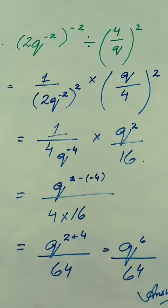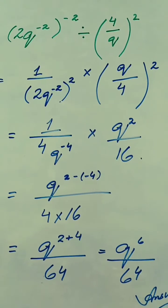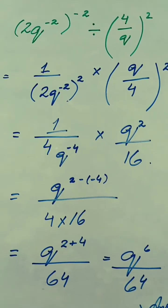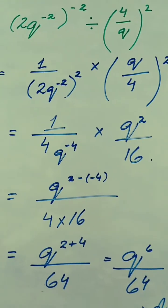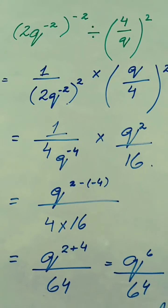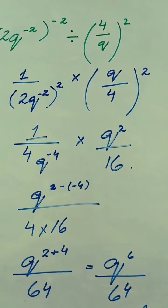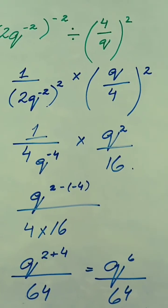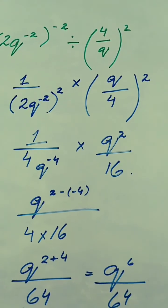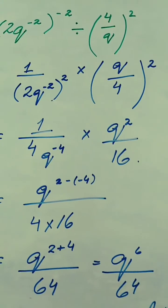Here we have another question: 2q raised to the power minus 2, whole to the power minus 2, divided by 4 over q, whole squared. First we make the minus 2 power positive by writing 1 over 2q to the power minus 2, whole squared. We have divided this factor by 1. Now changing the division sign to multiplication, the numerator becomes the denominator and the denominator becomes the numerator. So it becomes q over 4, whole squared. Solving this gives 1 over 4q raised to the power minus 4, multiplied by q squared over 16.